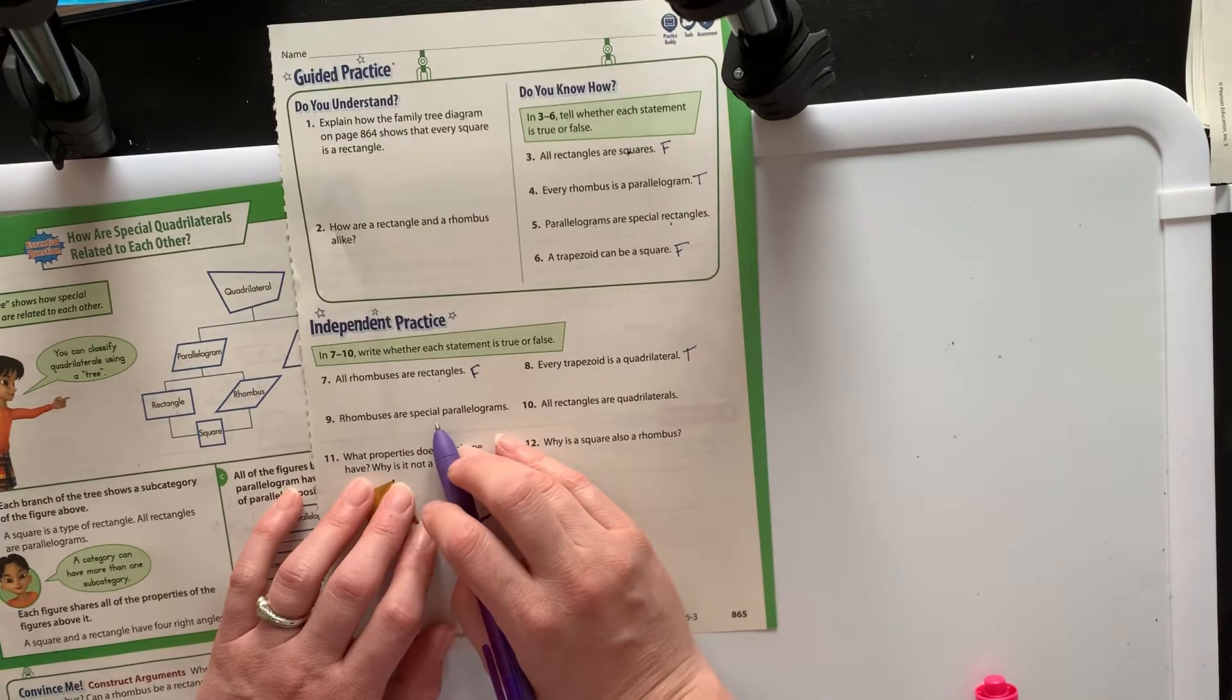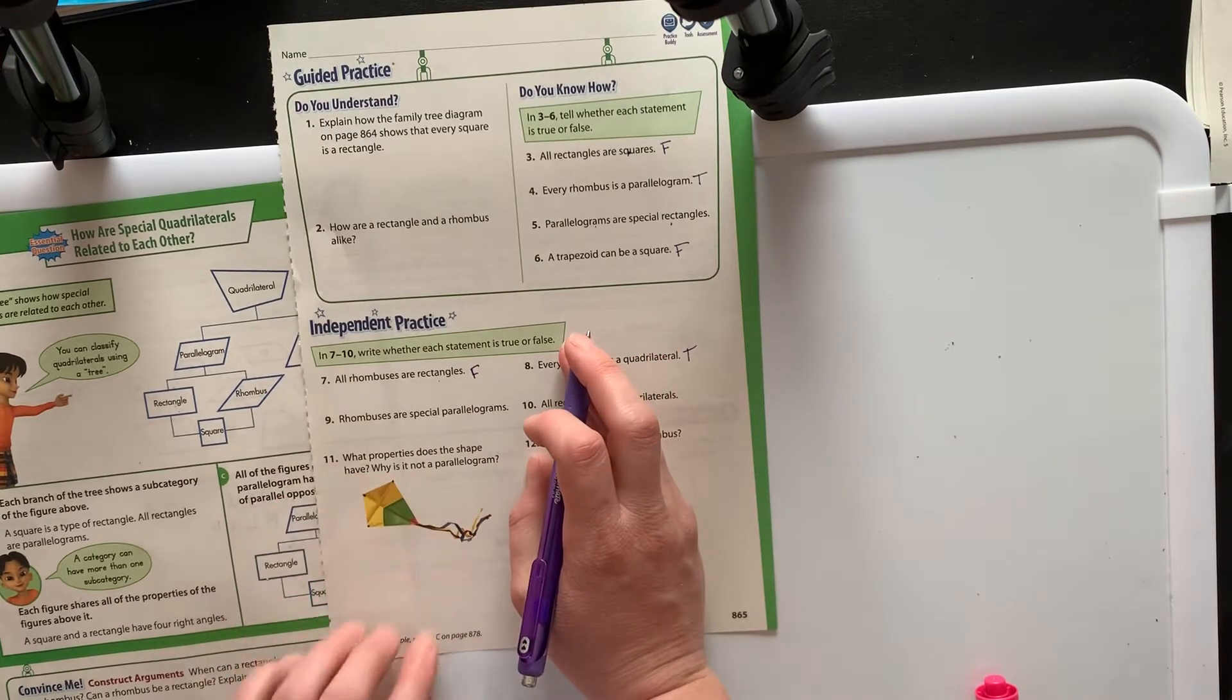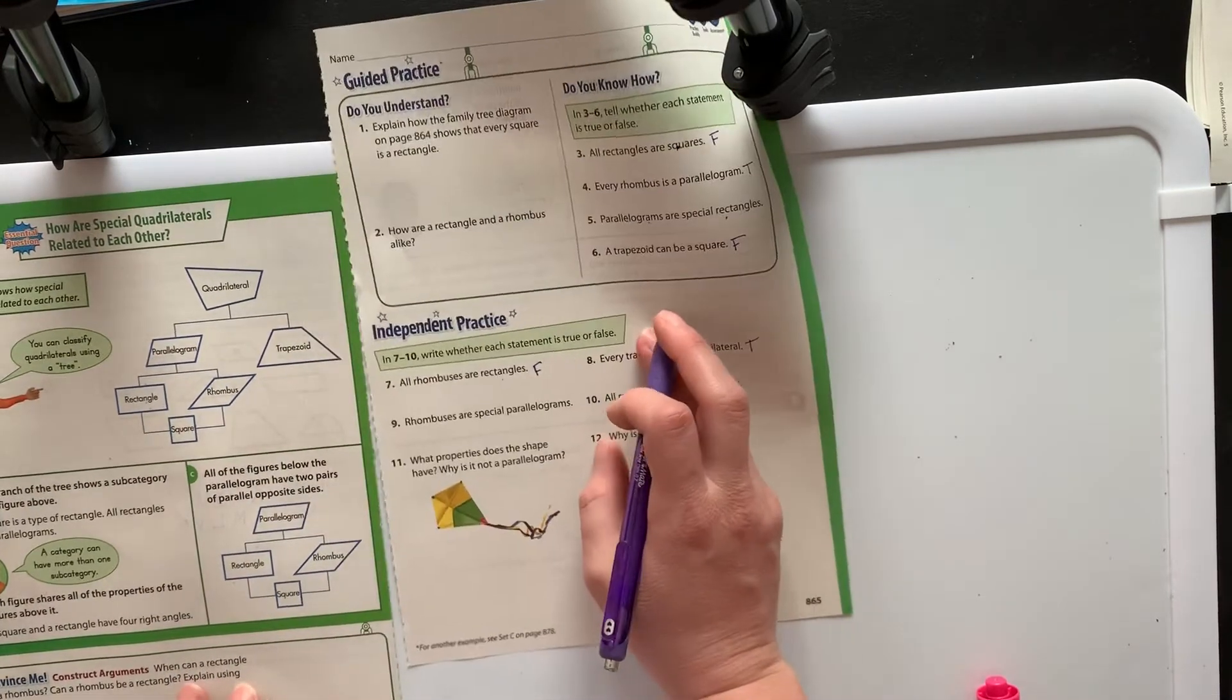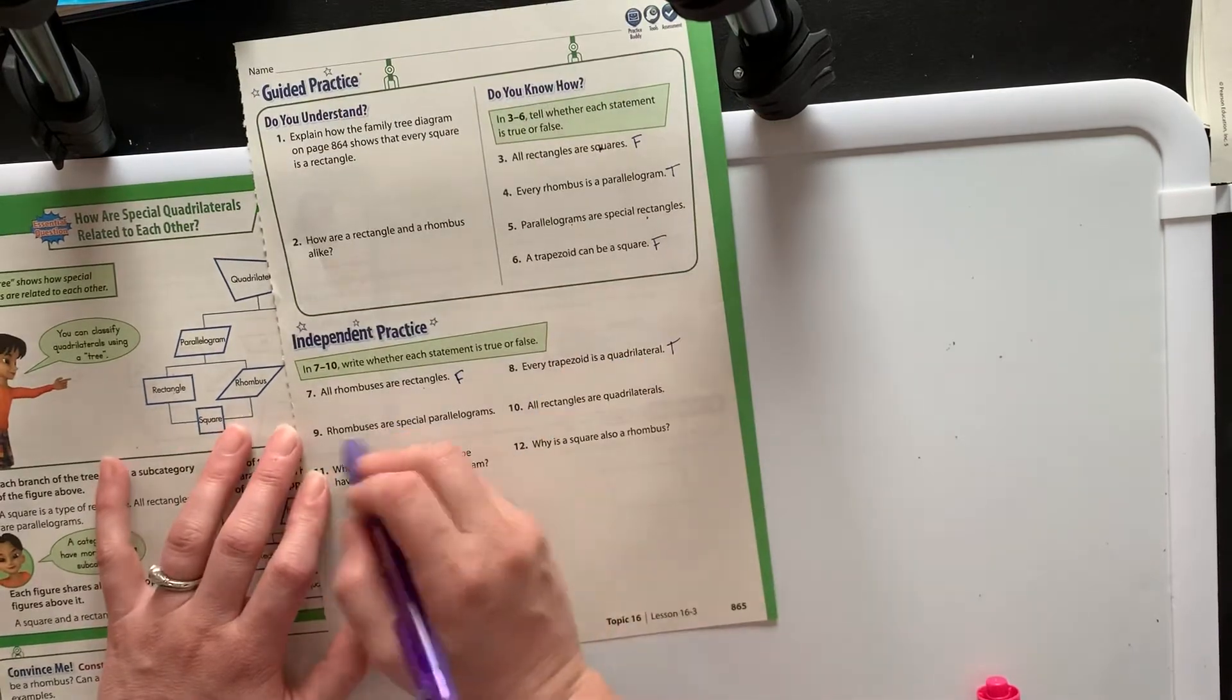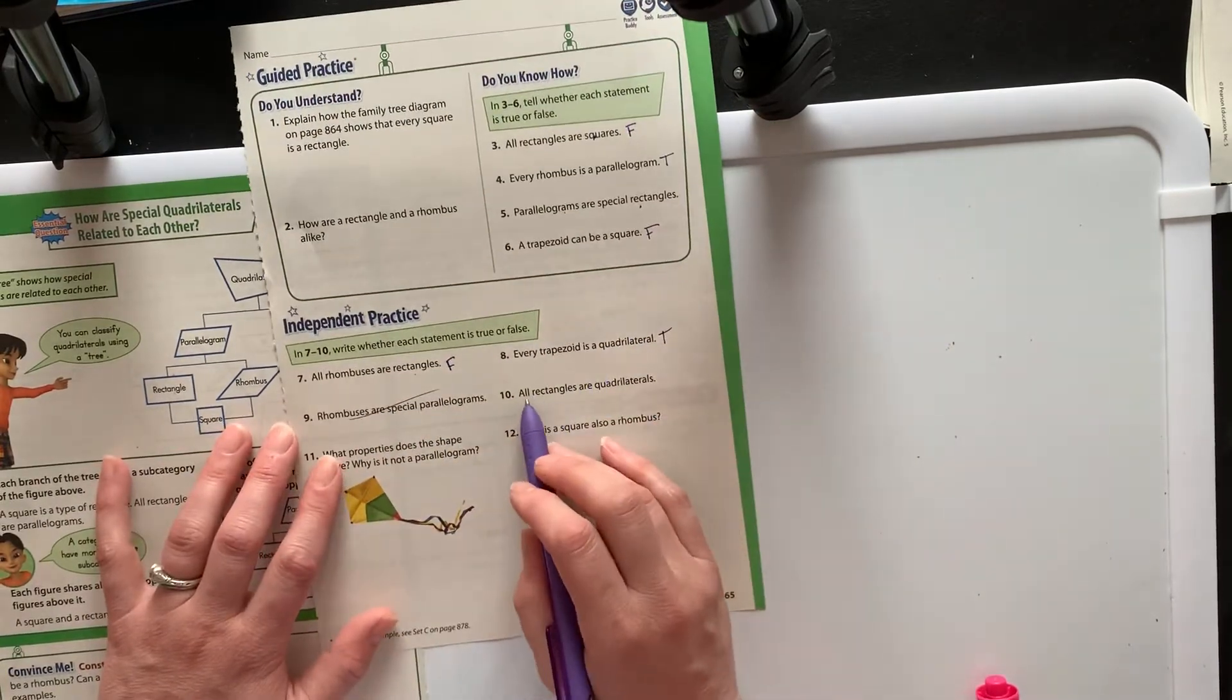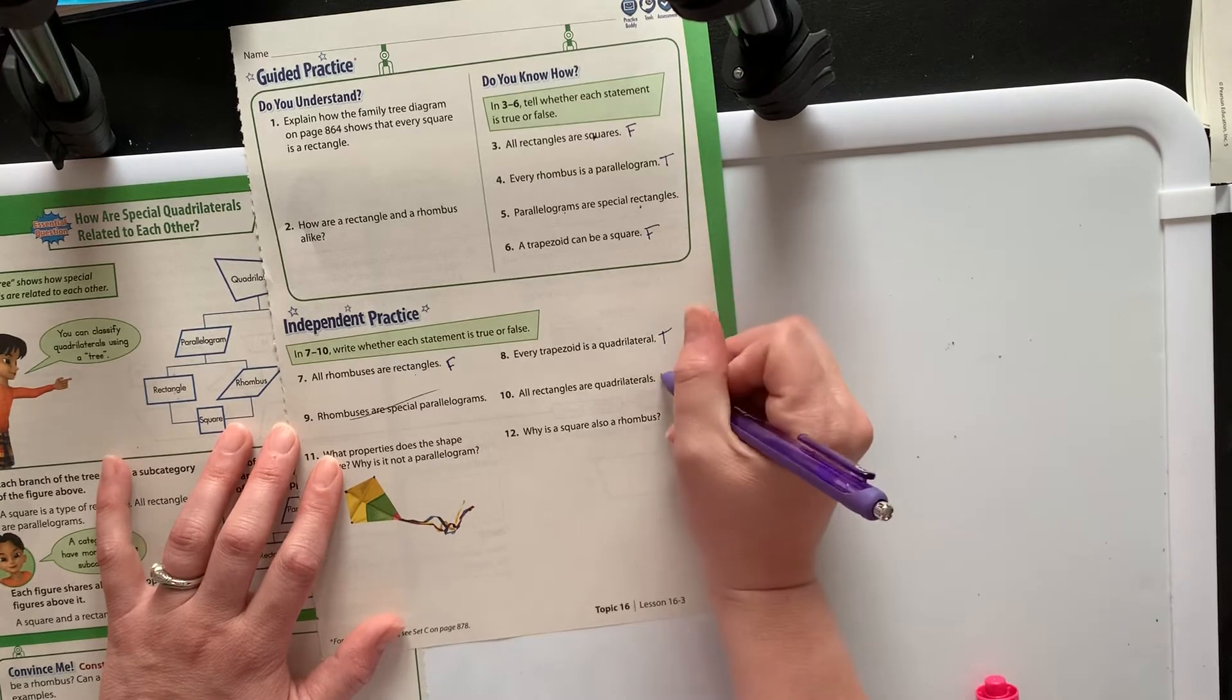Rhombuses are special. I don't know what this means by special. I'm ignoring the ones that say special. All rectangles are quadrilaterals. That is true.